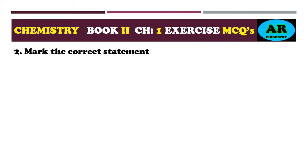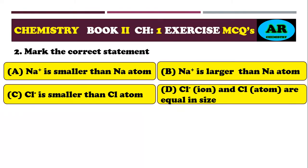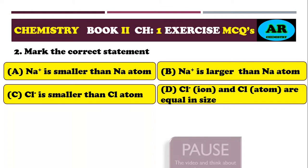Second MCQ: mark the correct statement. Option alpha: Na⁺ is smaller than Na atom. Option beta: Na⁺ is larger than Na atom. Option charlie: Cl⁻ is smaller than Cl atom. Option delta: Cl⁻ and Cl atom are equal in size.